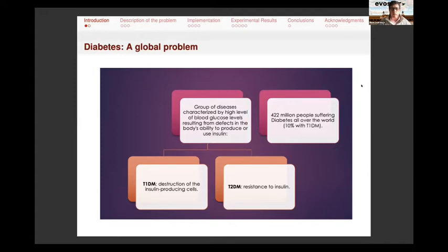Diabetes is a group of diseases characterized by high levels of blood glucose. Depending on the cause of the diabetes, we talk of type one or type two. Type one diabetes is usually in the early ages, young ages. And then type two is more after the fifties, usually.